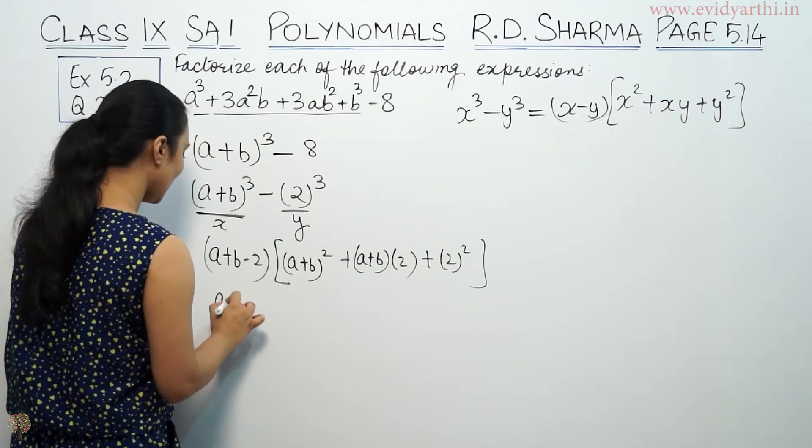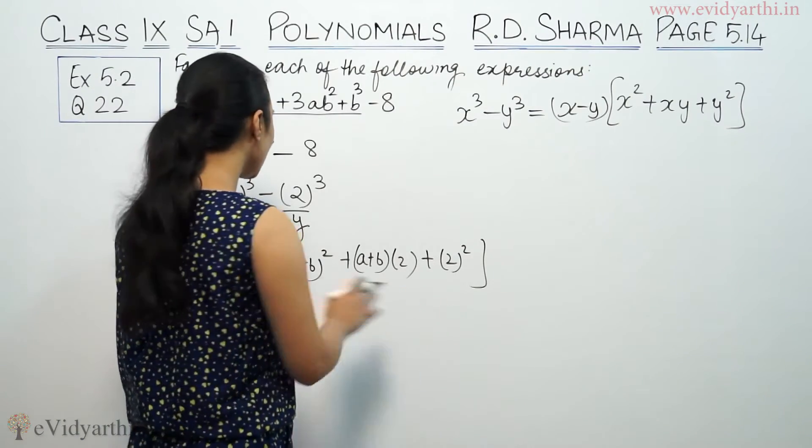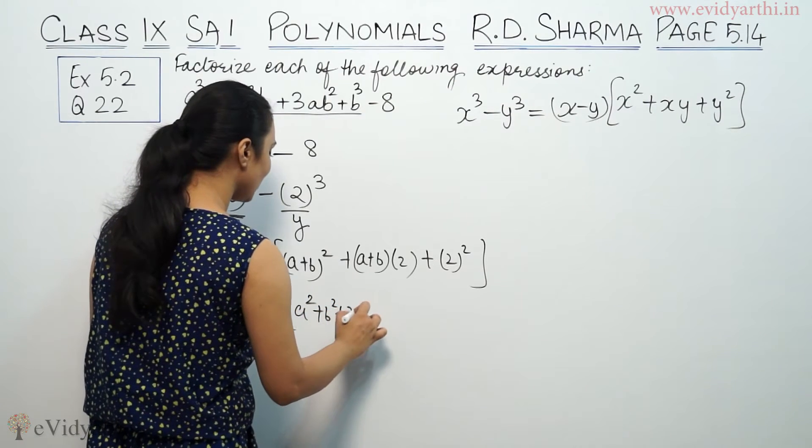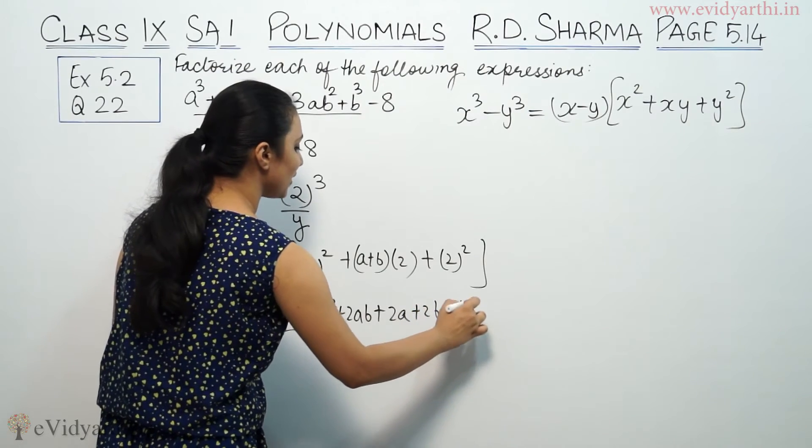So this will be (a + b - 2) times [(a + b)² + (a + b)(2) + 4]. And you don't have to write (a + b)².